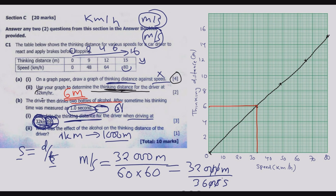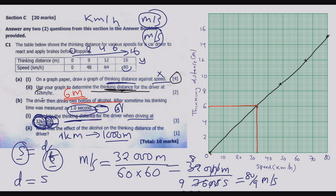Dividing both numerator and denominator by 4: 320 ÷ 4 = 80 and 36 ÷ 4 = 9, giving us 80 over 9 meters per second. Now that we have the speed in meters per second and the thinking time in seconds, we can find the thinking distance: distance equals speed times time.